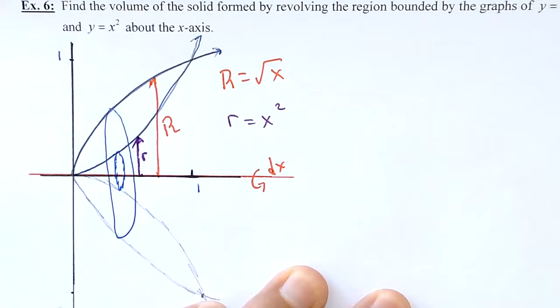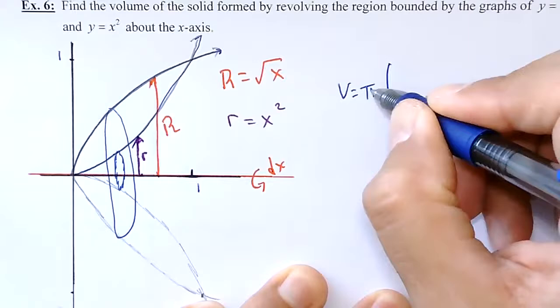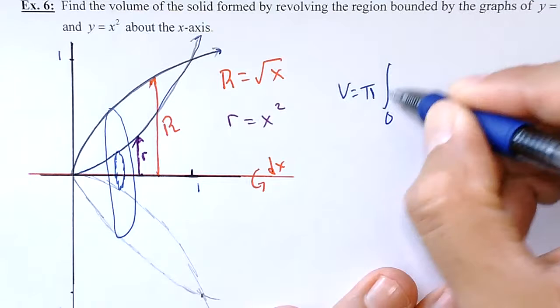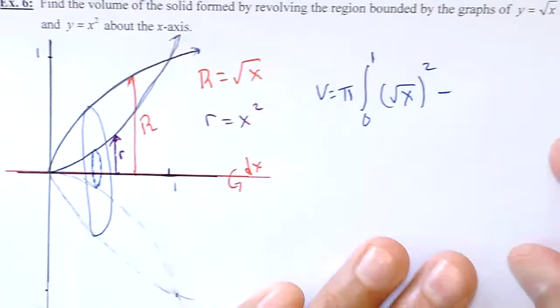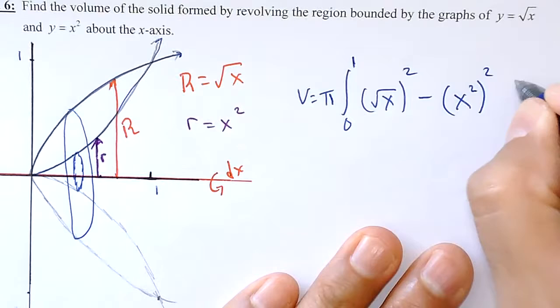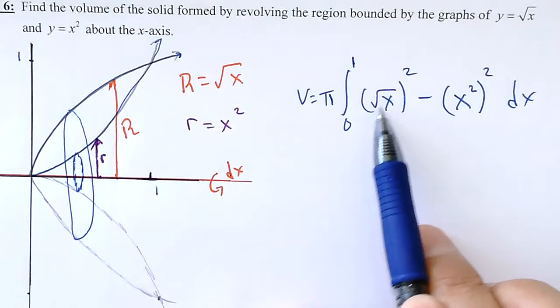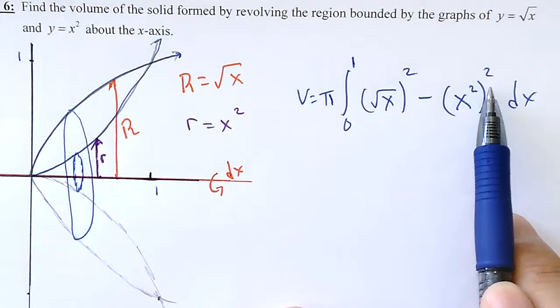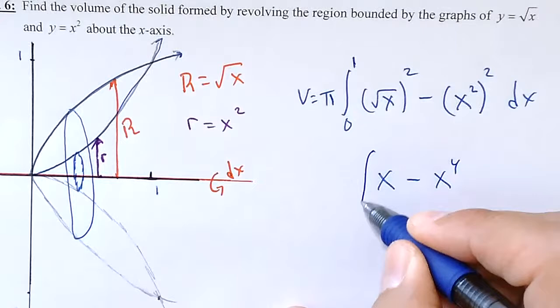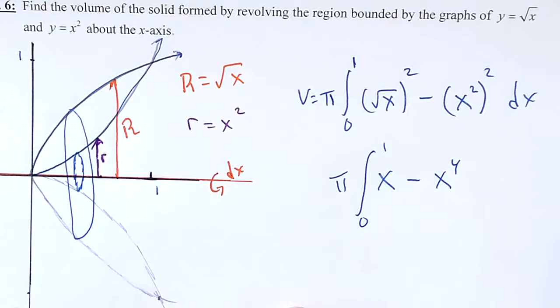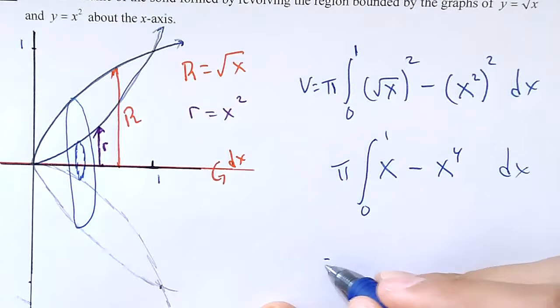When I find the volume, I use my formula. I have pi, and looking at my limits I'm going from 0 to 1. I take the big radius — square root of x — squared, minus the little radius — x squared — squared. When you square the square root of x you get x, and when you square x squared that becomes x to the fourth power. I invite you to pause and integrate — the volume should be 3pi over 10.